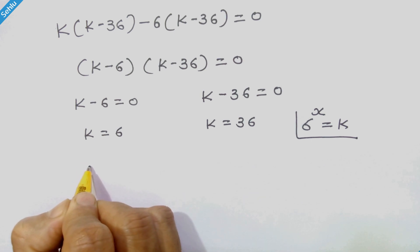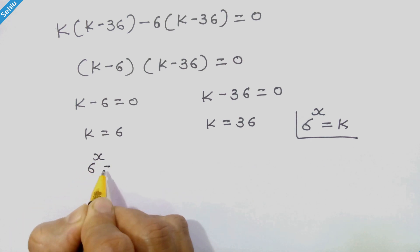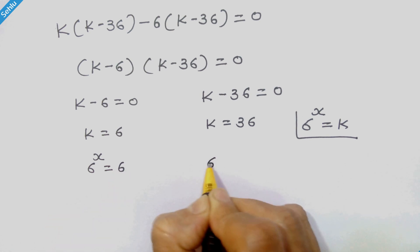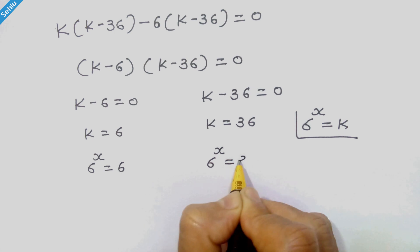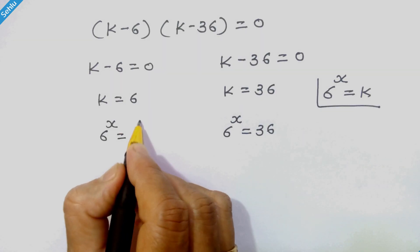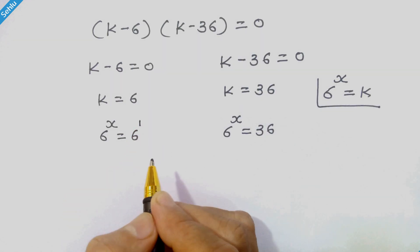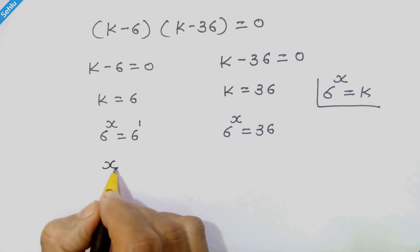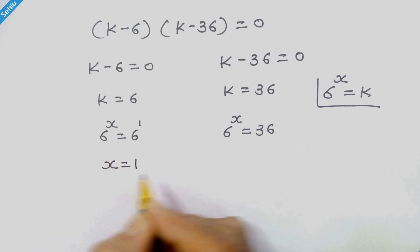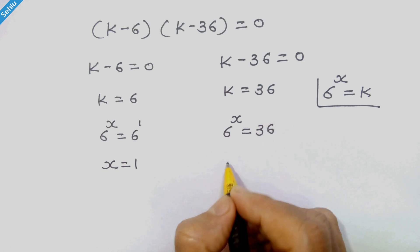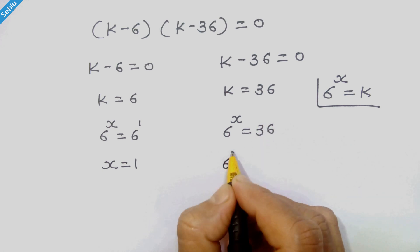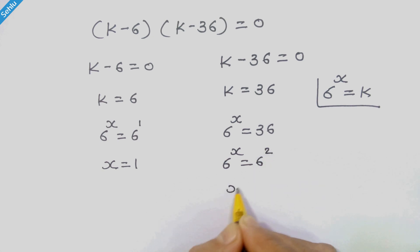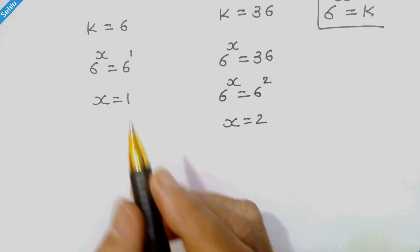Let's put the values back. We have 6 raised to x is equal to 6, which gives x is equal to 1. And we have 6 raised to x is equal to 36, which is 6 squared, so x is equal to 2.